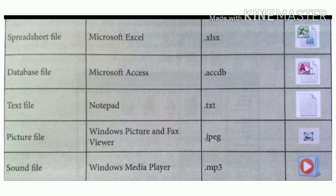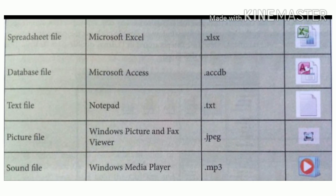A text file — its program name is Notepad, and the file name extension is .txt; its icon is shown on the right side. A picture file — its program name is Windows Picture and Fax Viewer, and the file name extension is .jpeg; its icon is also shown. A sound file — its program name is Windows Media Player, and the file name extension is .mp3; its icon is shown on the right side.